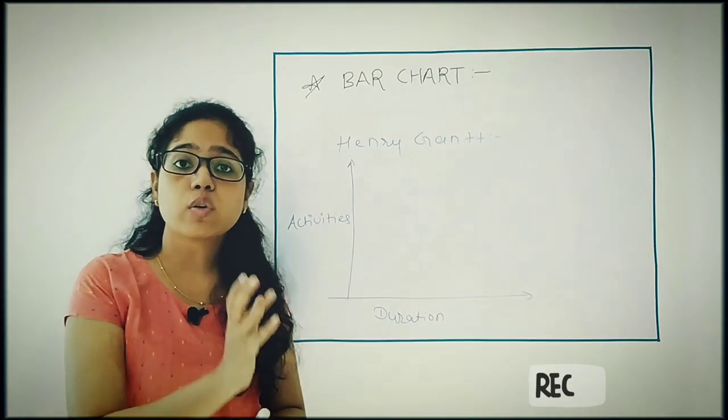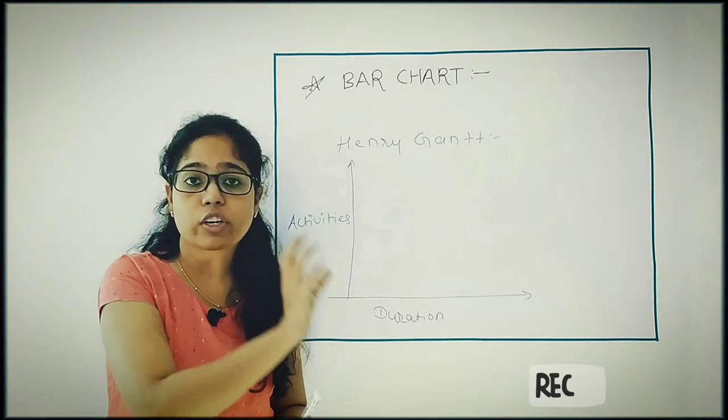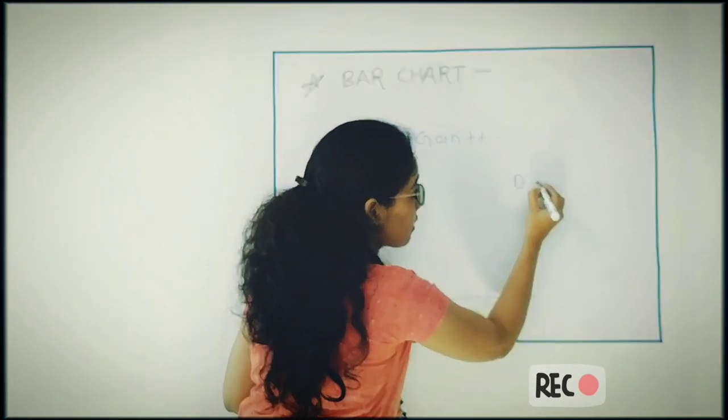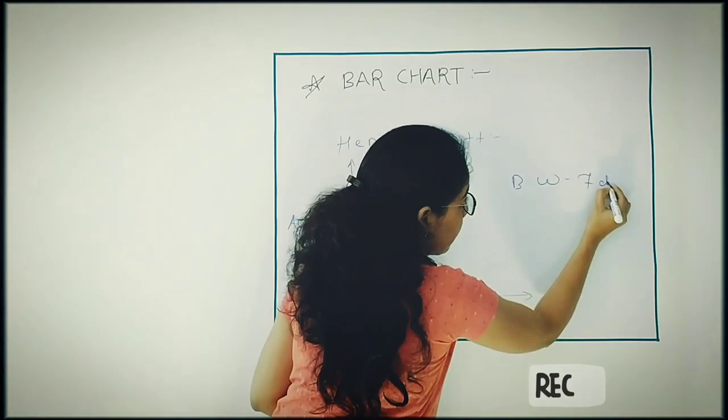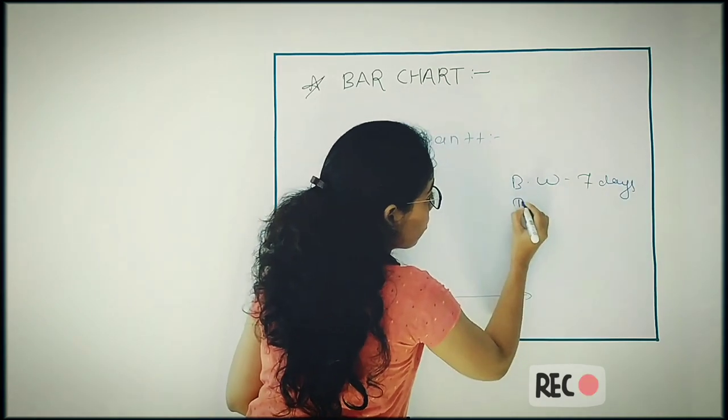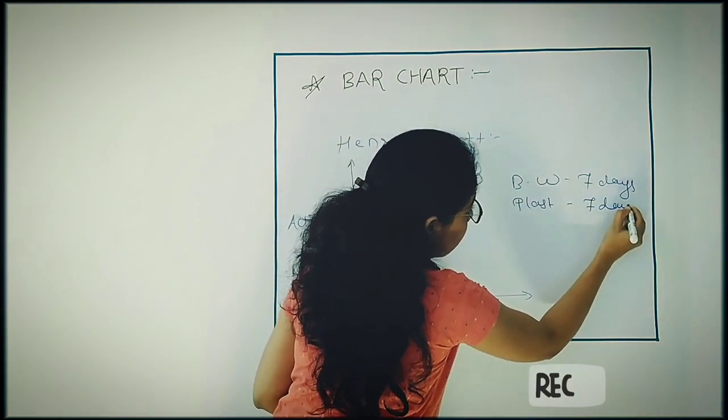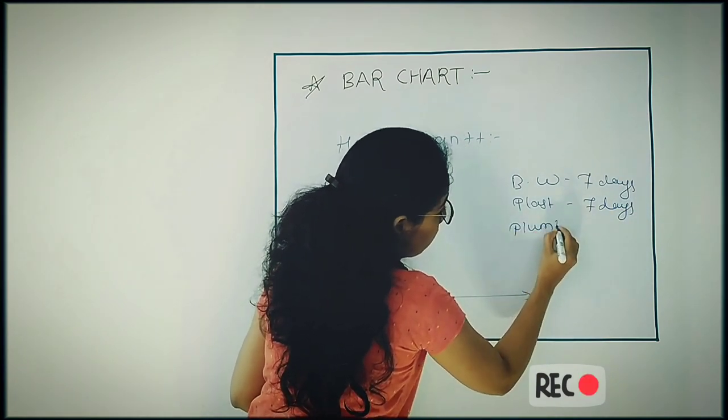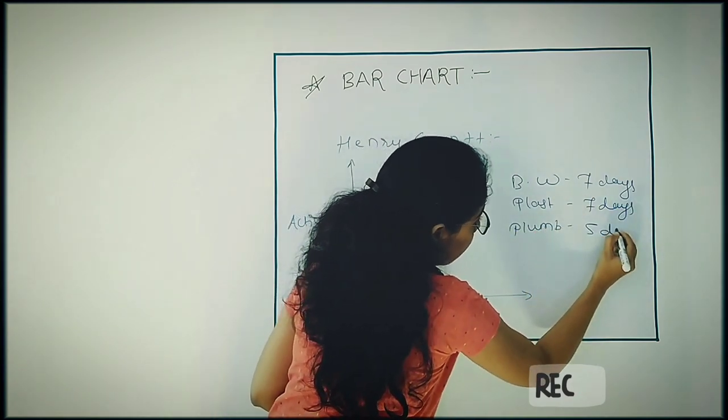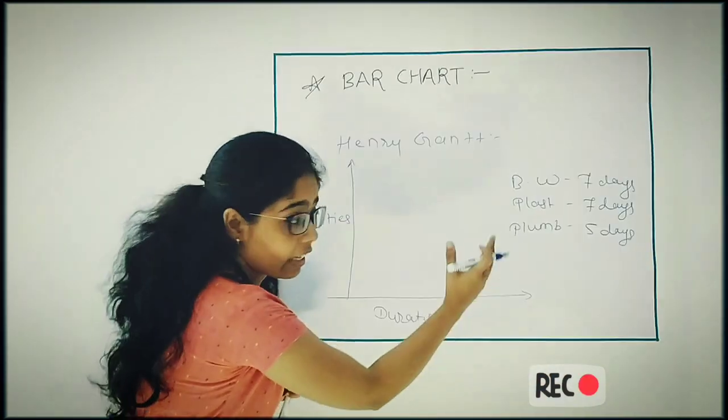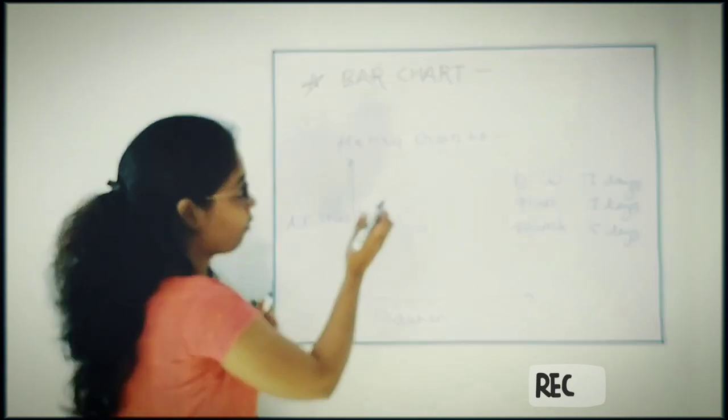In a bar chart, you have to start the first activity at the top. And also you should know what is the duration required for each activity. Suppose brick work is having duration of seven days, then plastering again seven days, then plumbing five days, and likewise. This much data you should have.